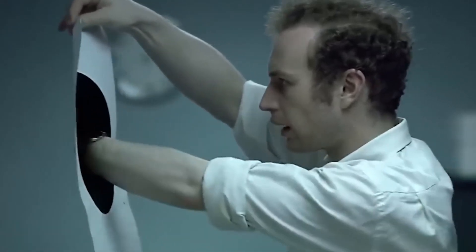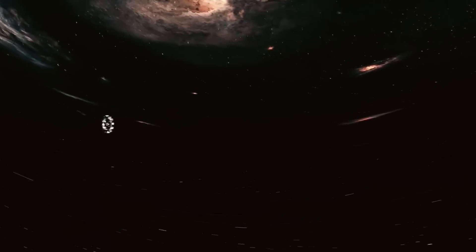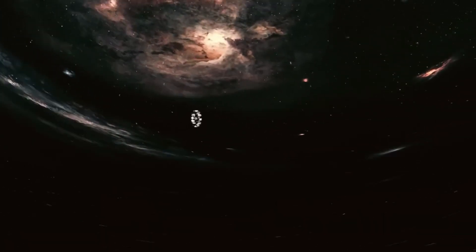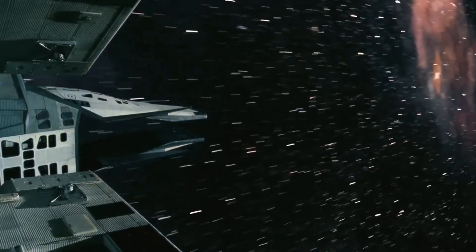As the core collapses inward, the outer layers explode outward in a supernova—a blast so bright it can outshine entire galaxies. And in that moment, the universe inherits: gold, platinum, uranium, all forged in the violence of a dying star.